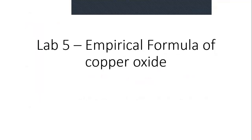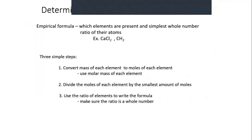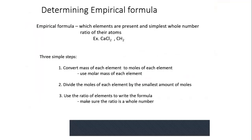This is the fifth lab in this lab series: empirical formula of copper oxide. An empirical formula is a formula which shows the elements in their simplest whole number ratio of their atoms or ions. The common multiple between the different atoms or ions in the compound is one. Most ionic compounds are written as their empirical formula — like calcium chloride, for example. CH2 is also an empirical formula where the common multiple between carbon and hydrogen is one.